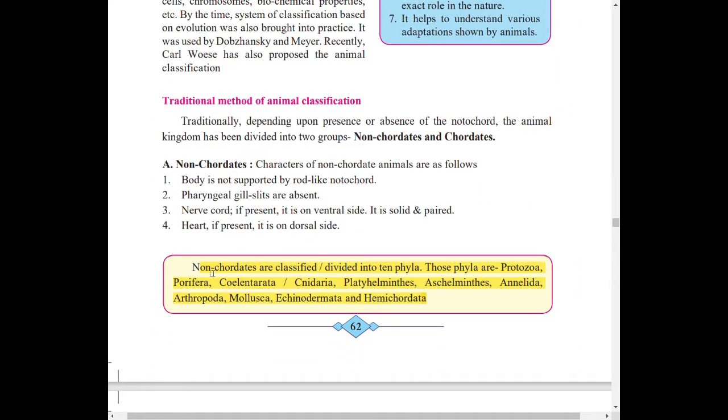On page number 62, at the bottom of the page, this part you have to remember. Non-chordates are classified or divided into ten phyla and the names of those ten phyla. So this is the first important point that you have to remember.